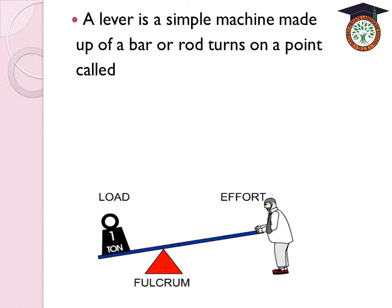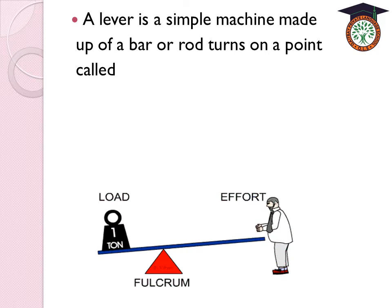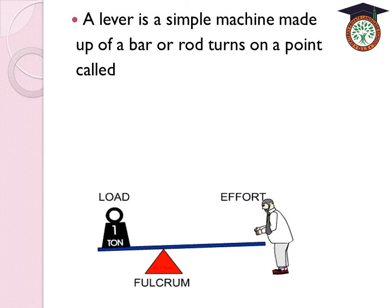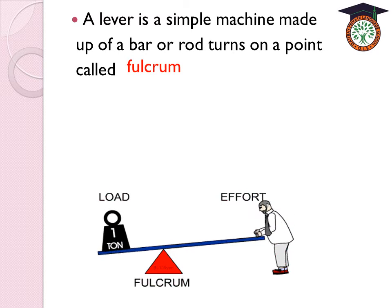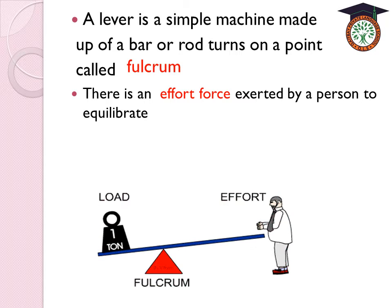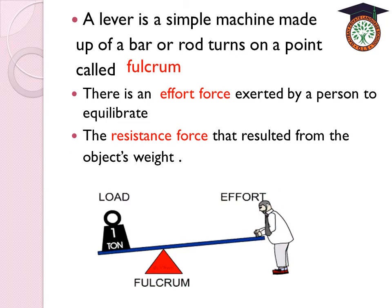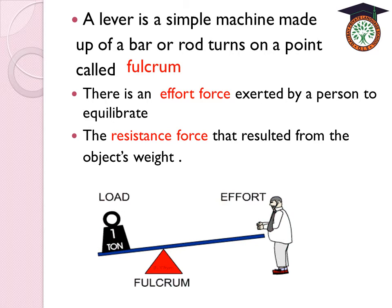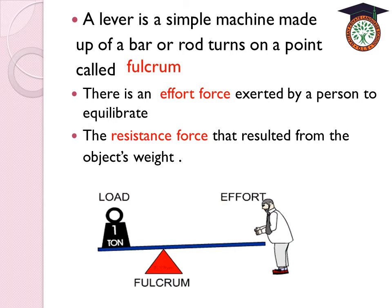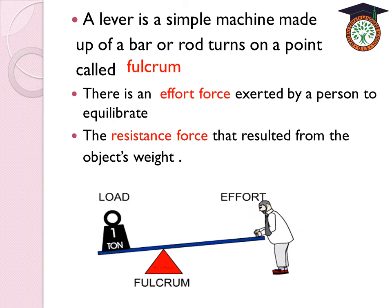Any lever is a simple machine made up of a bar or rod that turns on a fixed point called the fulcrum. There are two forces acting on this lever. The first force is the effort force — the force exerted by a person to equilibrate the second force, which is the resistance force. The resistance force results from the object's weight, here one ton, and the person tries to equilibrate it.